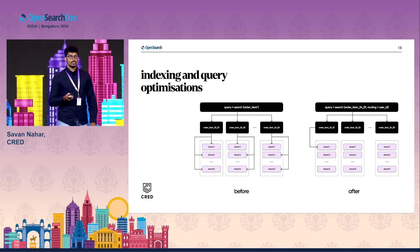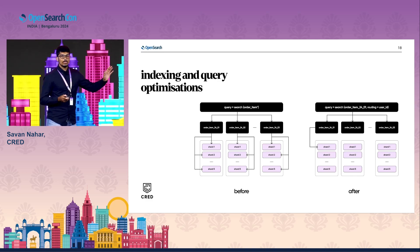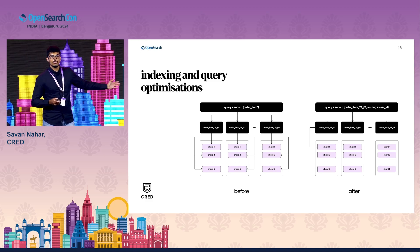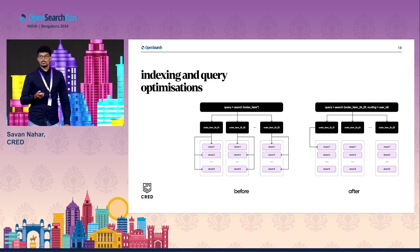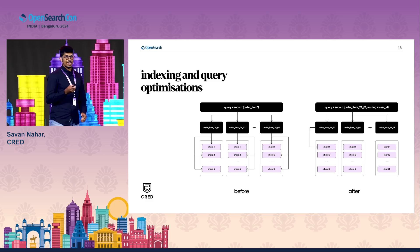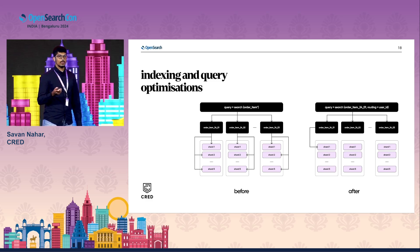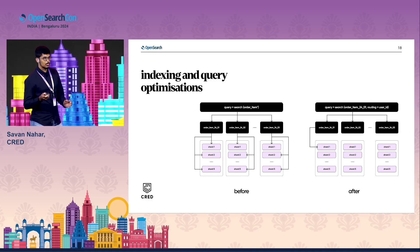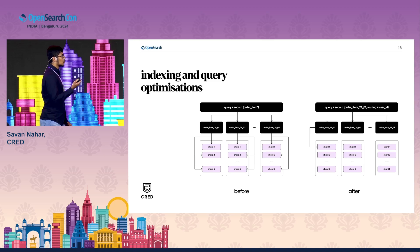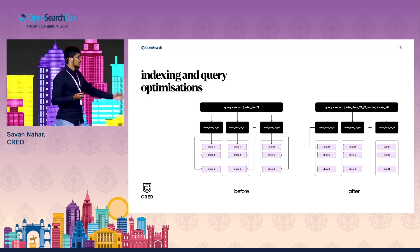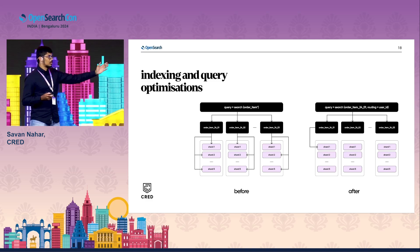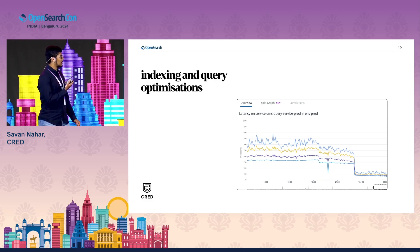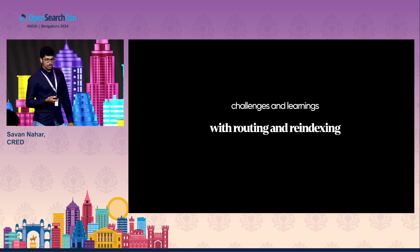The next set of challenges were around the way we were querying. Earlier, all queries for a particular index type were a wildcard search which used to hit all the indexes and all the shards within the indexes. We did two things: first, we introduced routing. Since the CRED app is very specific to a user, it made sense to have user ID as a routing key. And for most queries, we started time-bounding the query so you can query only for a specific time range. With these two optimizations, from hitting all indexes and all shards, we started hitting only one index and one shard of that particular index. This helped us reduce the latency from a peak p99 of 400ms down to 35ms.